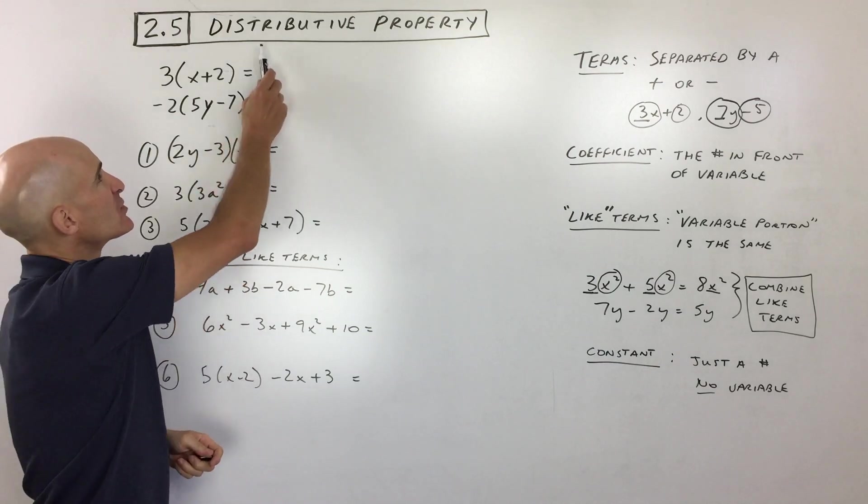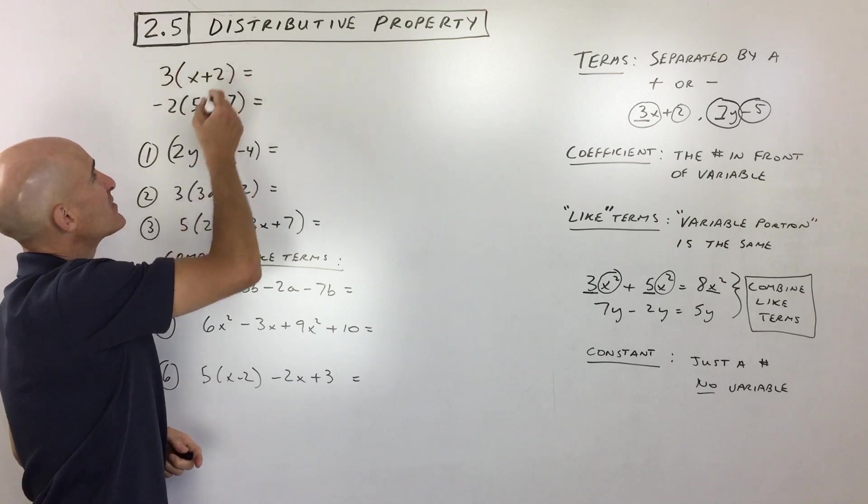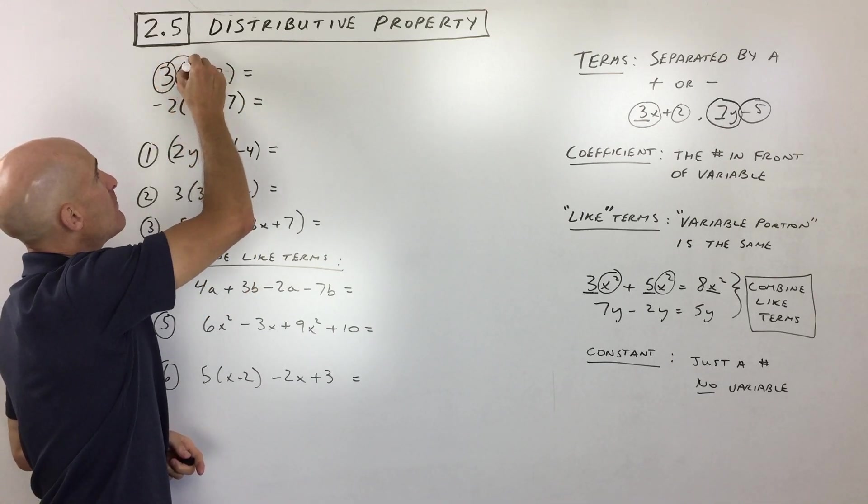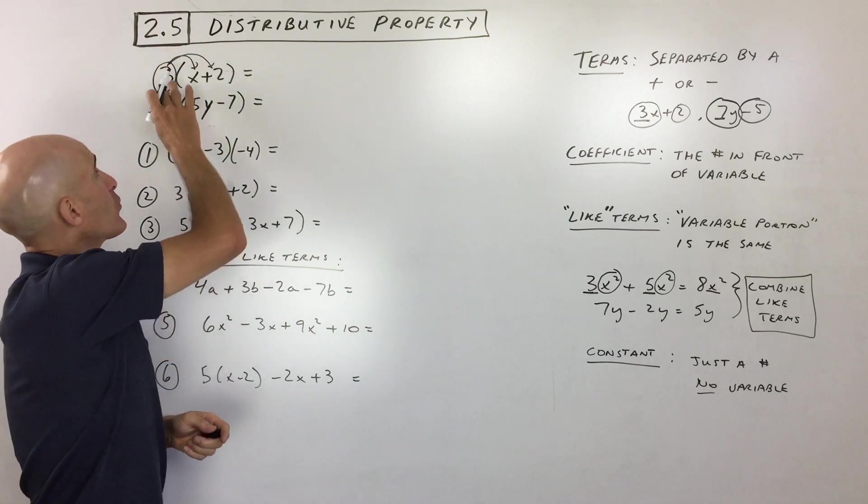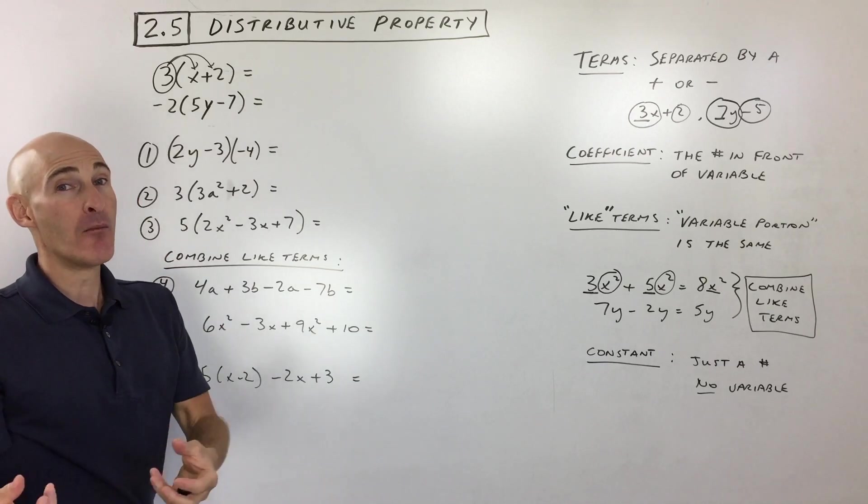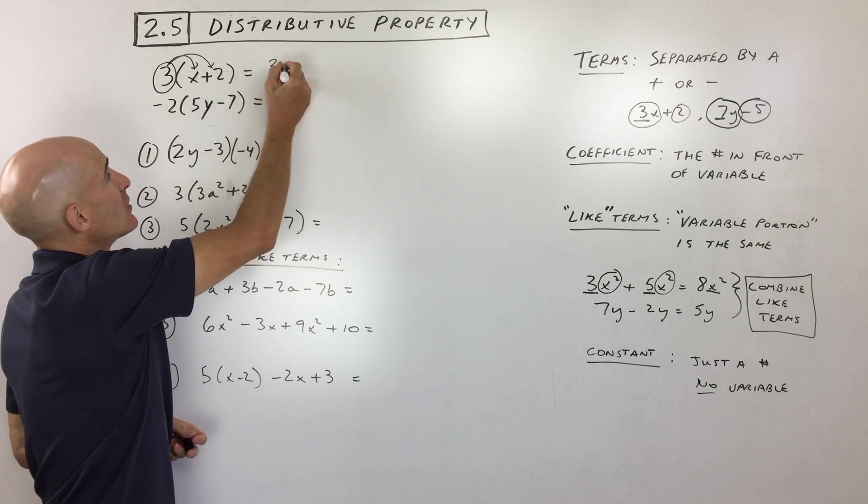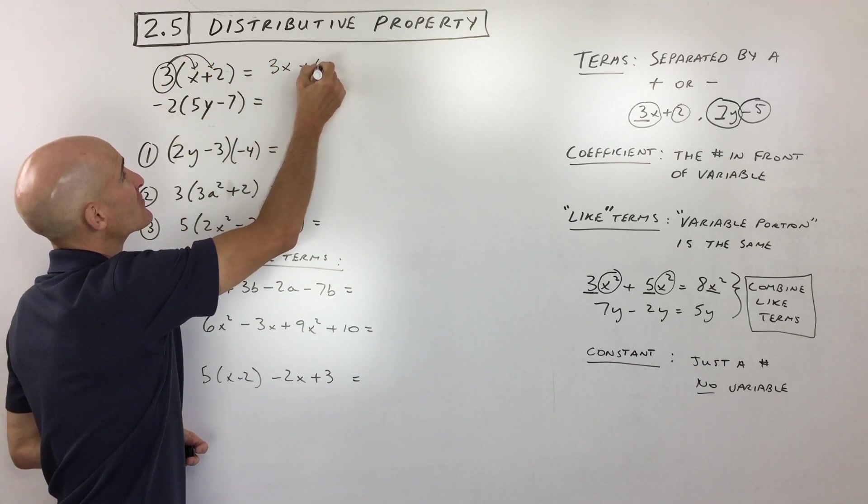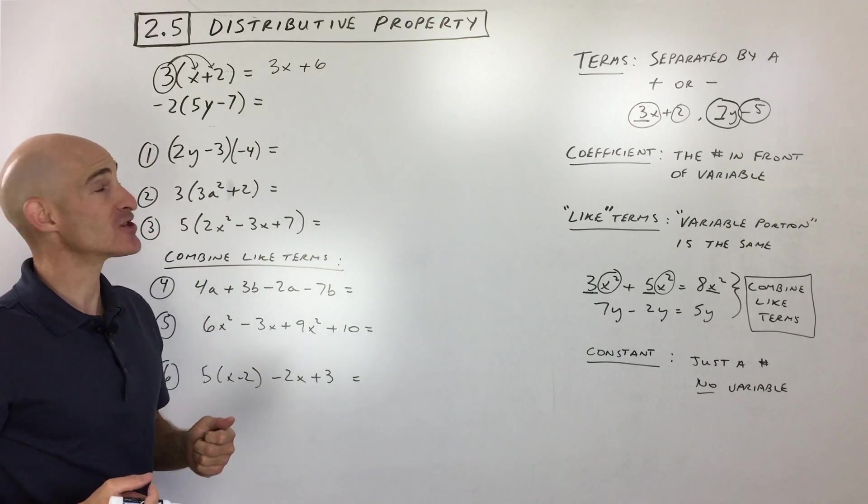But let's talk about the distributive property. So distributive property, what that means is when you have parentheses like this, you take the number that's outside of the parentheses and you multiply or distribute it into the parentheses. Now remember, when two quantities are right next to each other, side by side, what does that mean? Multiplication, right? So what we're doing is we're saying 3 times x, which is 3x, 3 times 2, which is positive 6. So we get 3x plus 6. That's the distributive property in action.